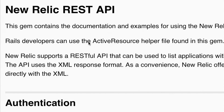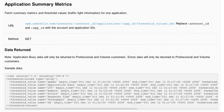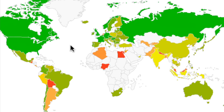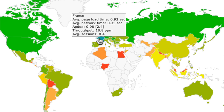The New Relic Data API provides access to performance metrics. Now you can correlate application performance metrics with other business metrics. For example, you can map end-user response time by geography to sales in that same region to show how app performance is impacting your business.